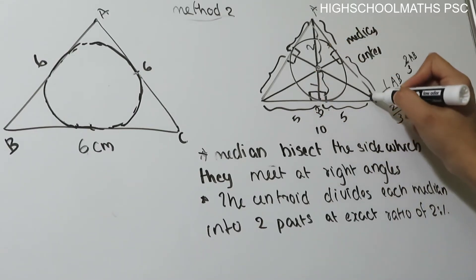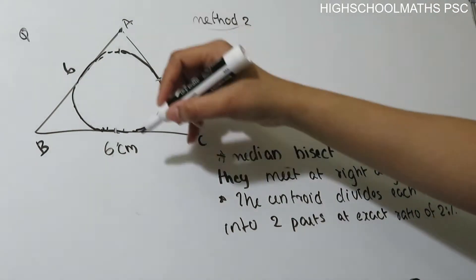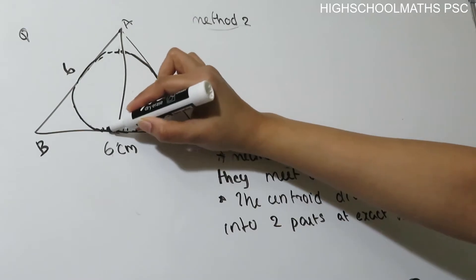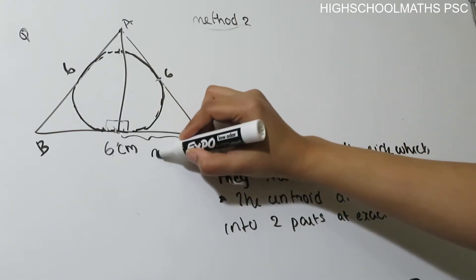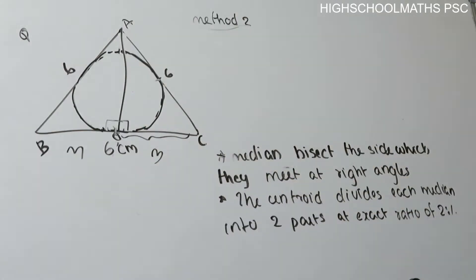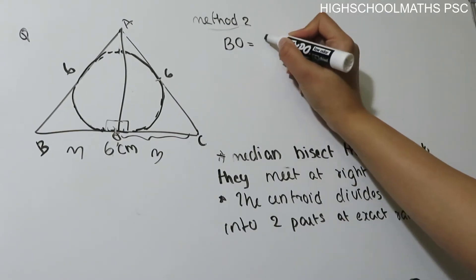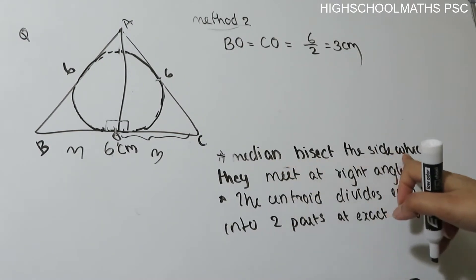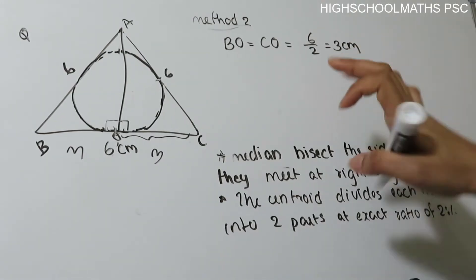If you have a median, this median is 1 by 3 and this is 2 by 3. We consider right angle triangle AOC. AO is our median. BO is equal to CO, that is equal to 6 by 2 = 3 cm. The median bisects the side which they meet at right angles, so the median bisects to 3 cm.